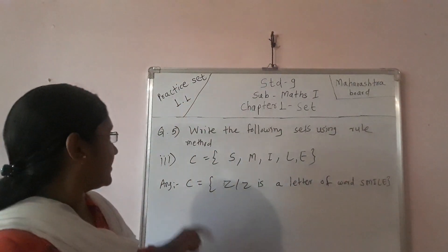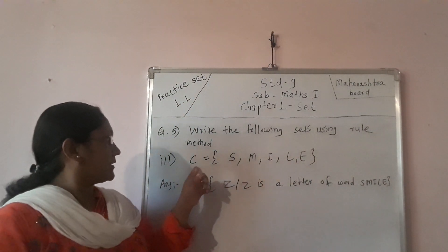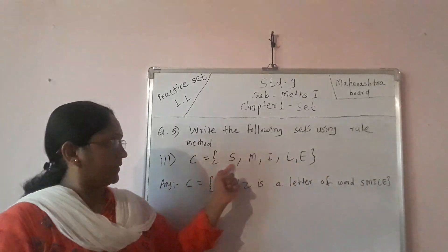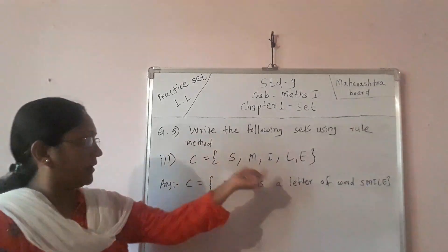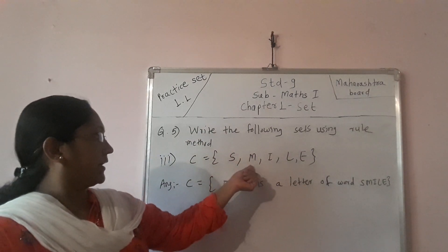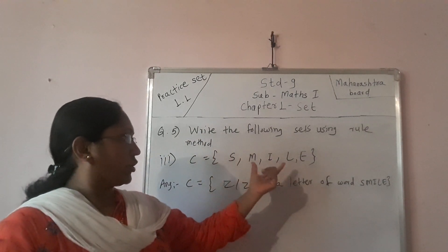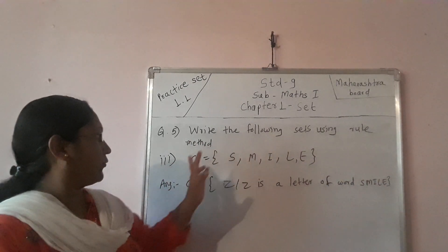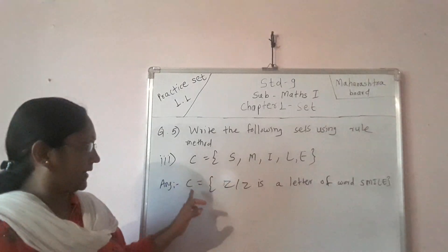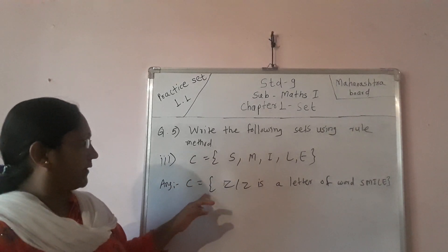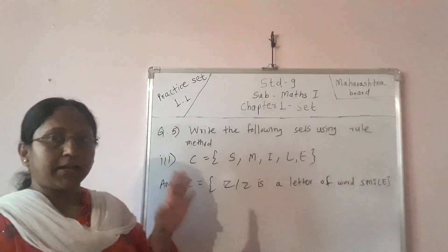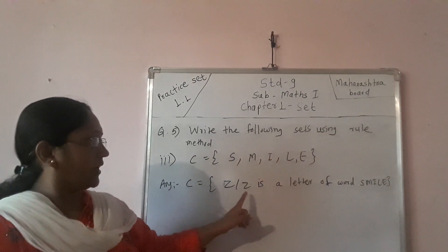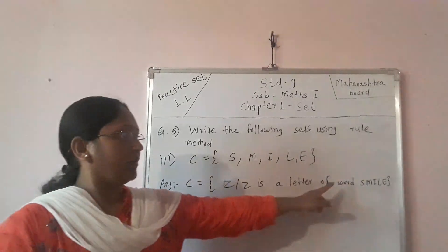Next sub-question: C = {S, M, I, L, E}. These are the elements. We know these letters form the word 'smile'. So using rule method, I declare C as it is: C = {z | z is a letter of the word 'smile'}.